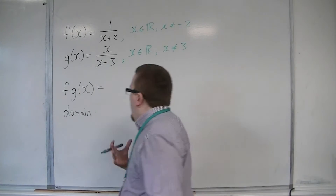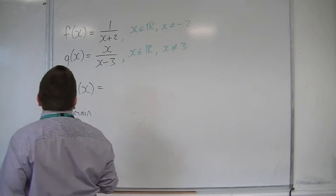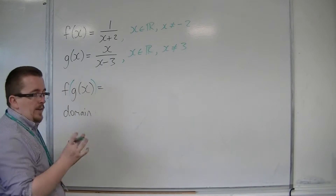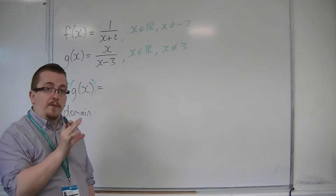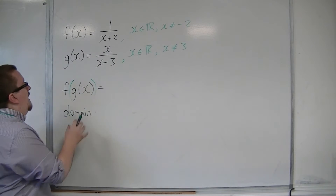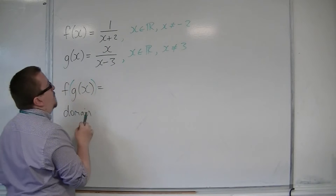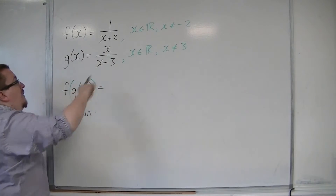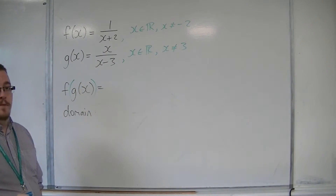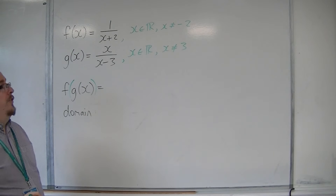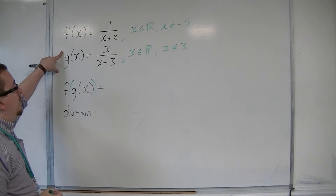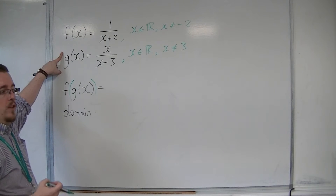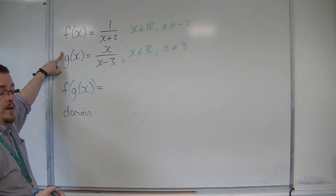When I am looking at f of g of x, the g of x is coming first. And so, any number that I put into this must obey that restriction. So the restriction of x not being equal to 3 must be maintained, otherwise it's not going to work.